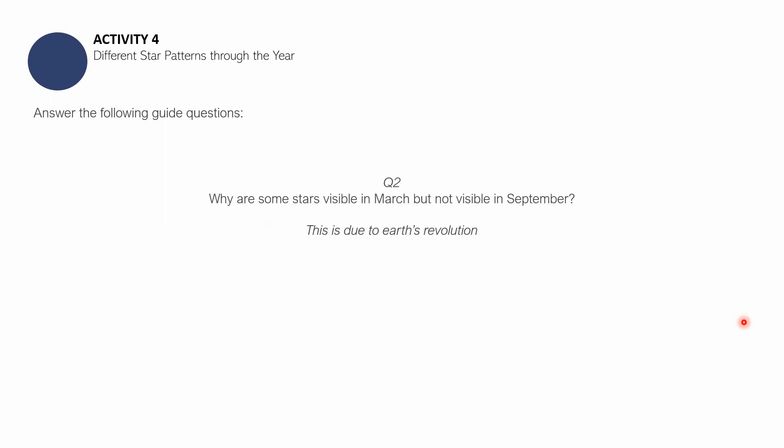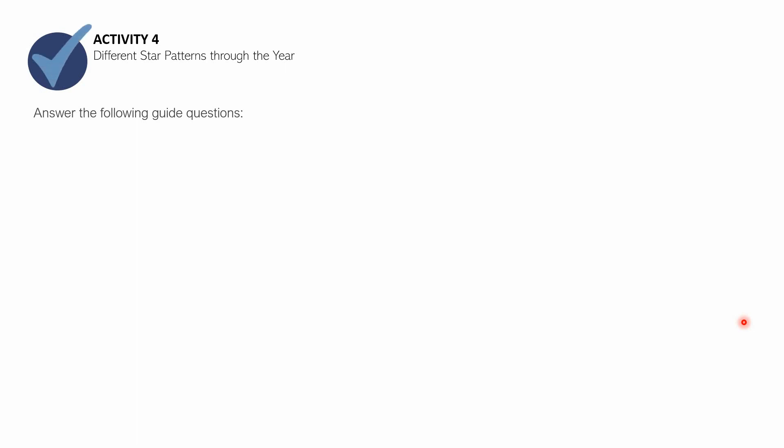For the second question, the answer is: this is due to the Earth's revolution. Remember, when we say revolution, we are referring to the movement of planet Earth around the Sun. When we say rotation, we mean the rotation of the planet on its own axis. We are through with activity number 4, different star patterns through the year. Please report your score on the upper right-hand corner of your paper and keep it in your science notebook until I can check them.